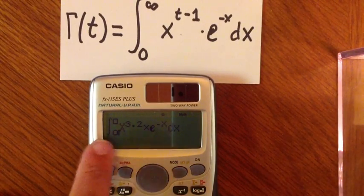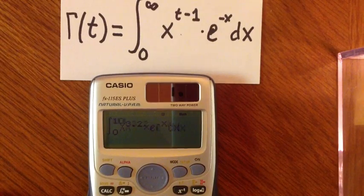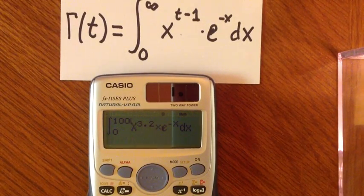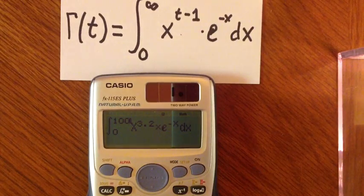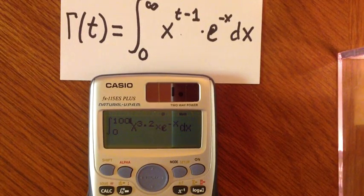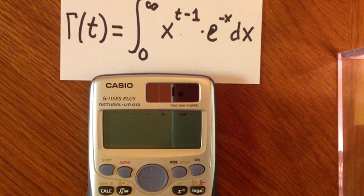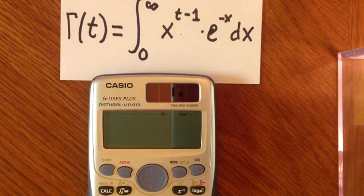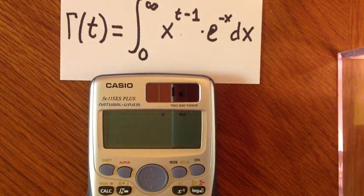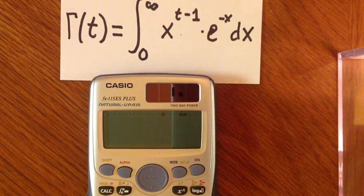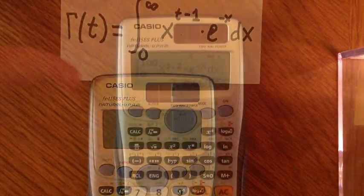We want 3.2. My lower limit is going to remain zero. And I'm going to enter 100 as my upper limit. 100 should be an efficient upper limit for 4 to 5 decimal points. And I hit the equal sign. You can't see it on here. But I've hit the equal sign.